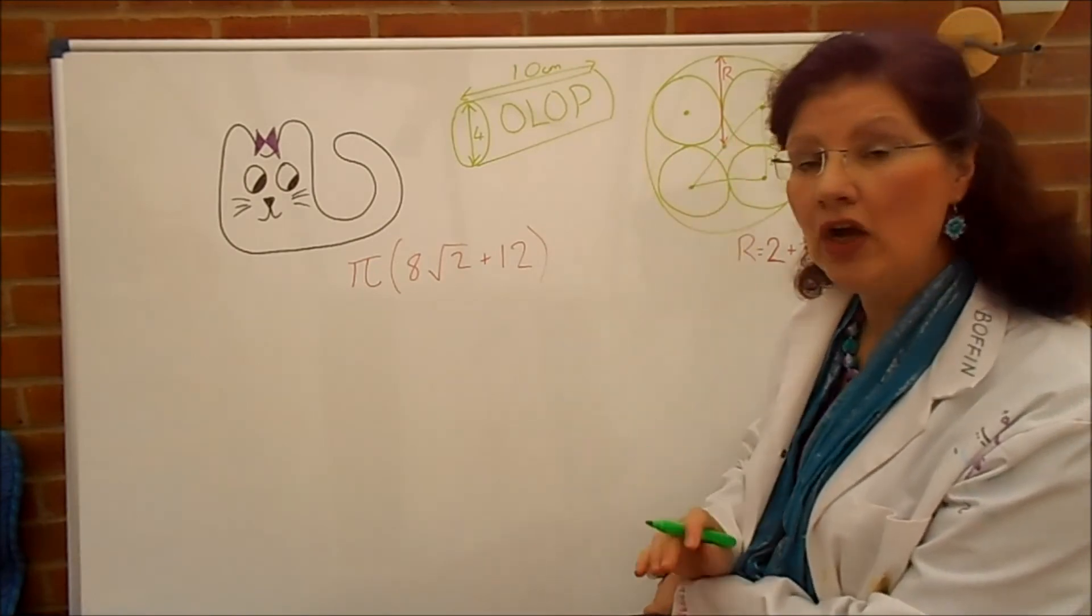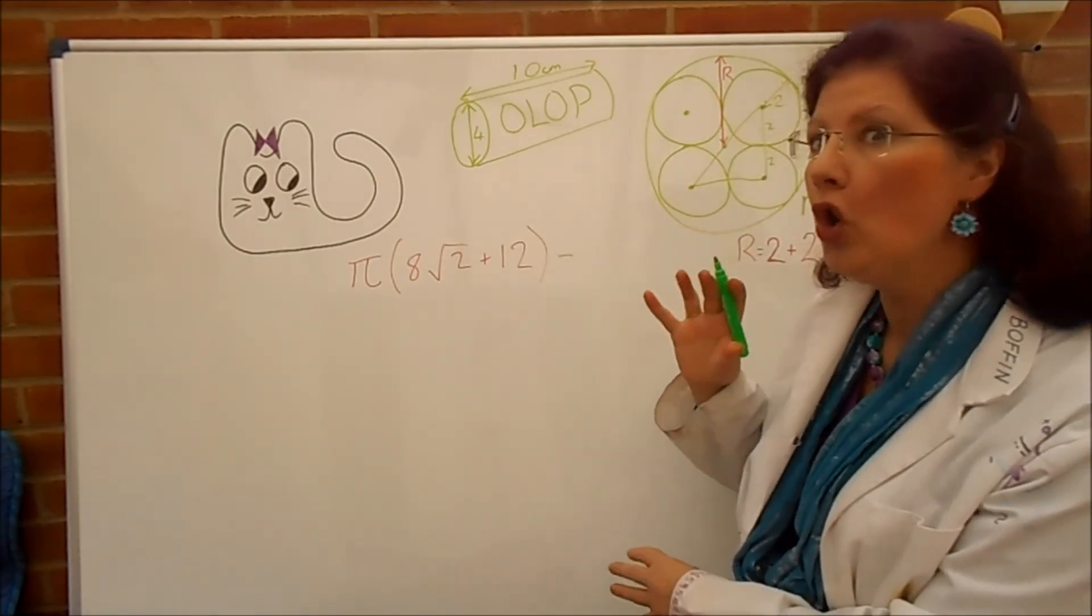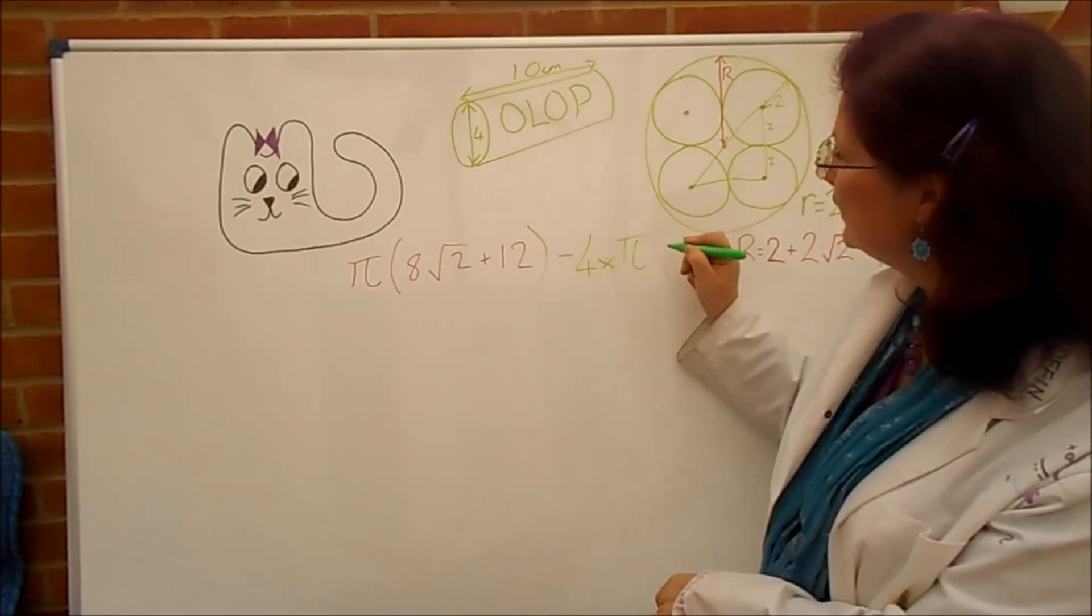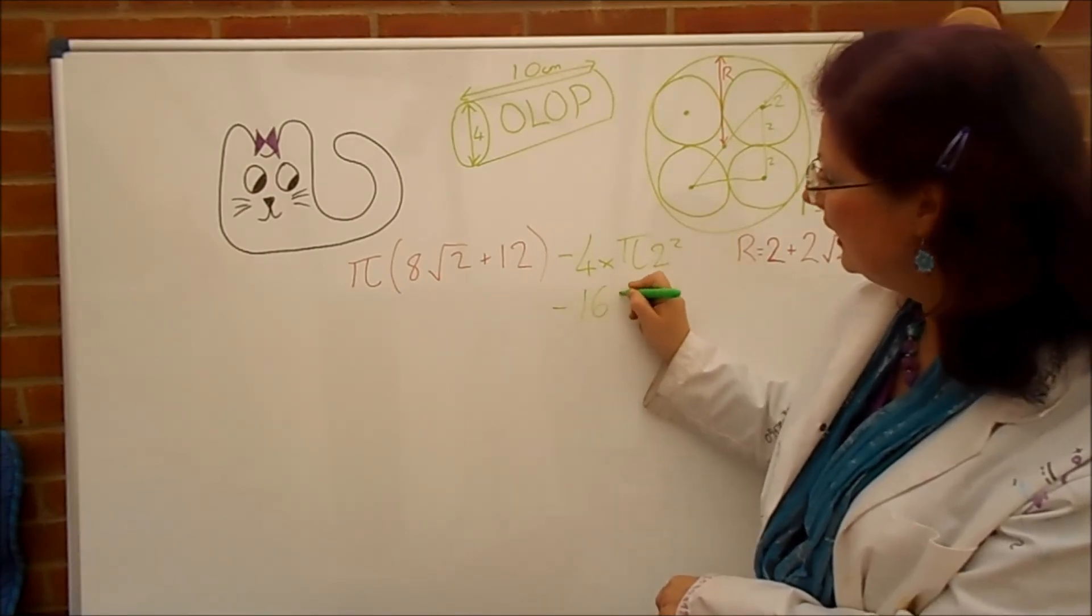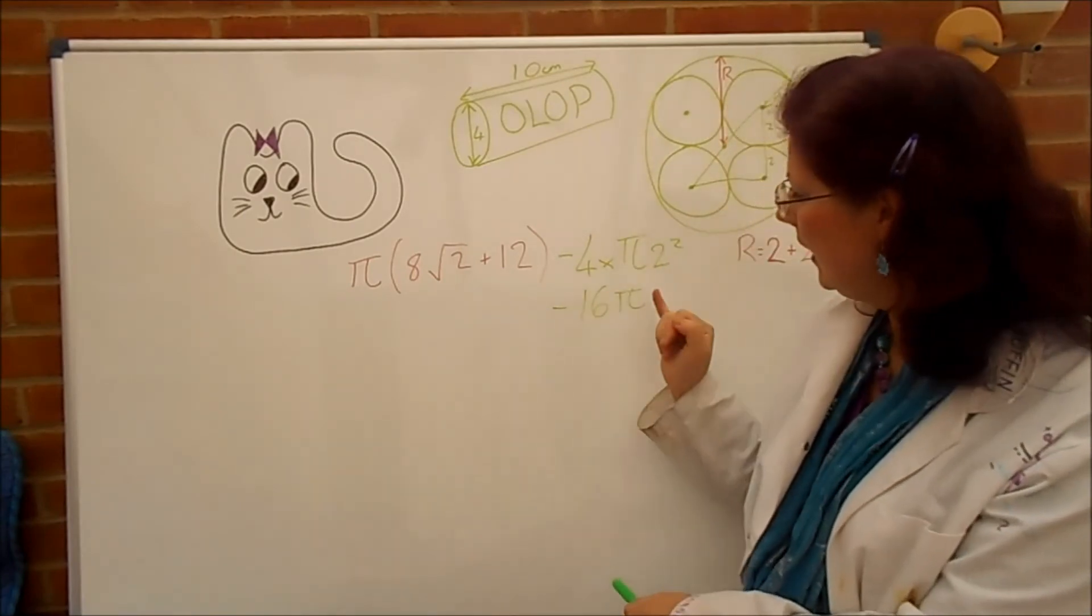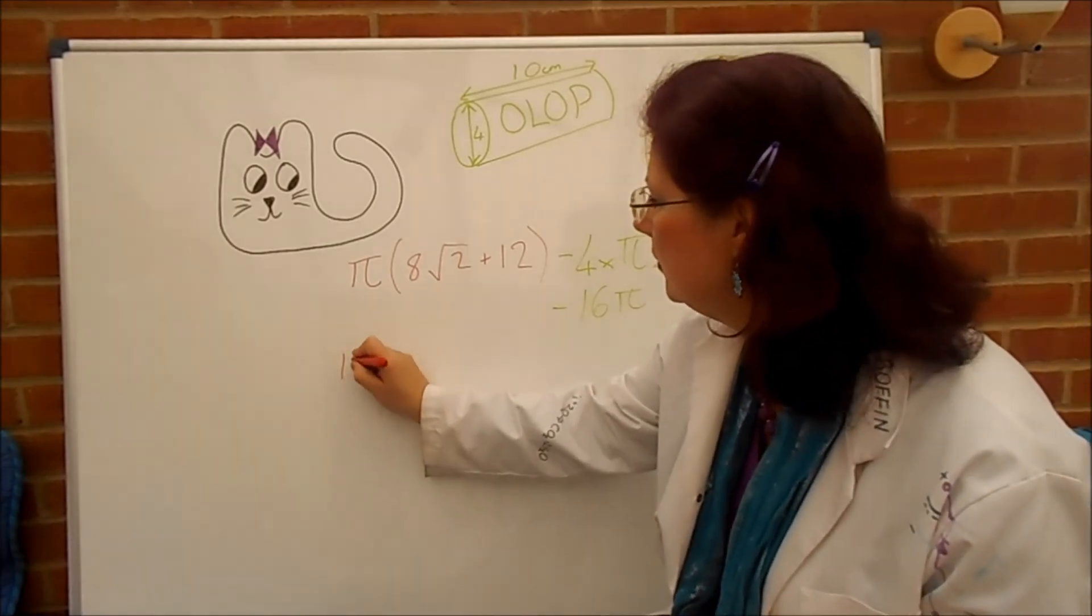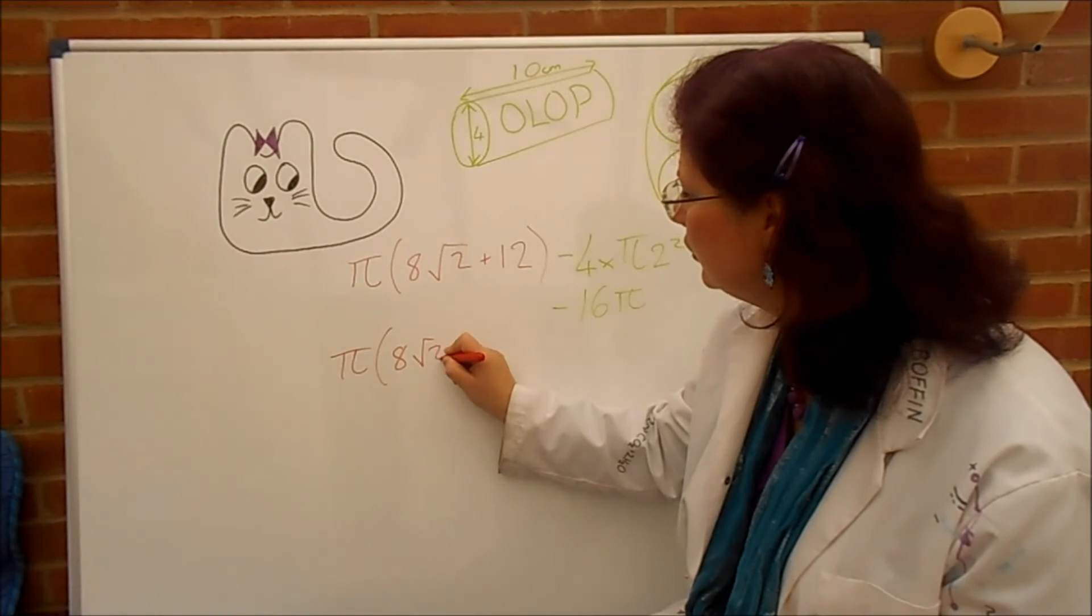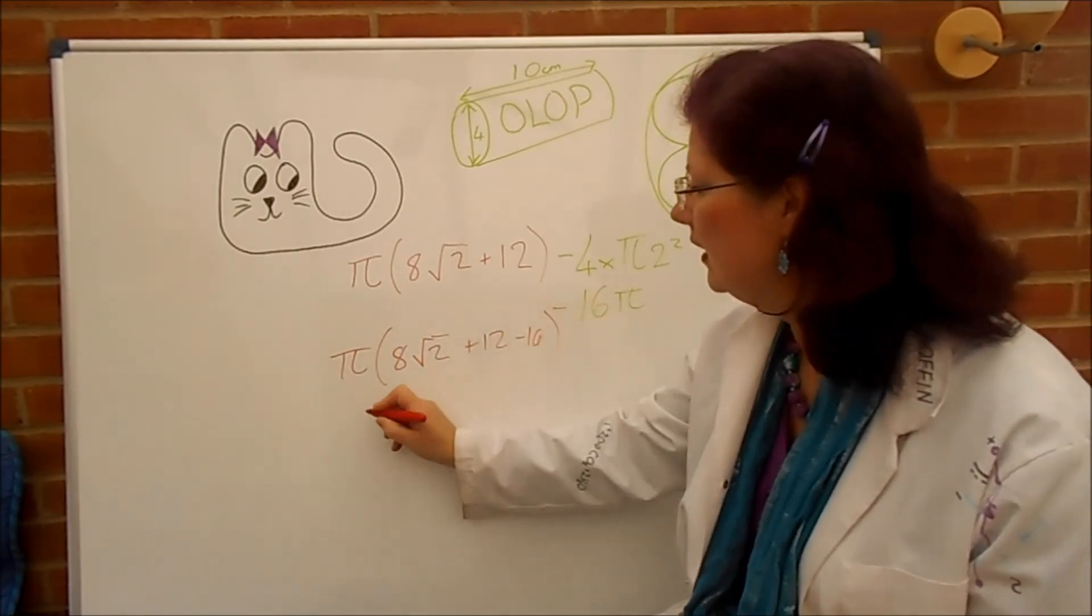Right, so there's the area of the cardboard tube given in the red and then we just need to take away the four allop tubes which is dead easy. It's four lots of pi times the little r which in this case is two squared which works out to be a 16 pi there. So, when I combine those two I can take pi outside the brackets. So, let's just do that there. That comes out to pi multiplied by eight root two minus four.